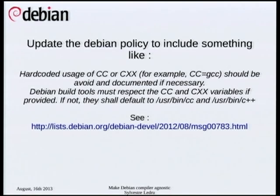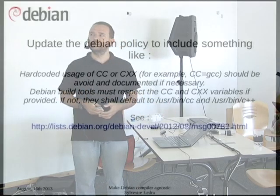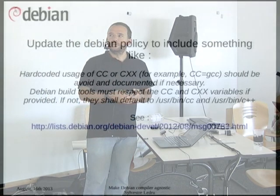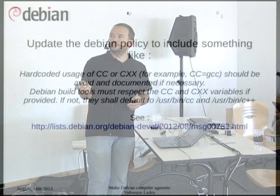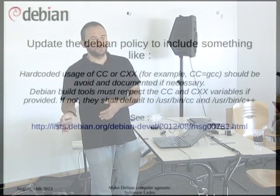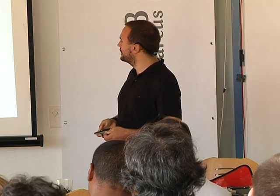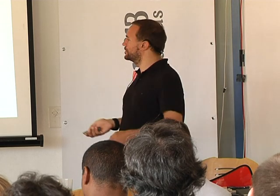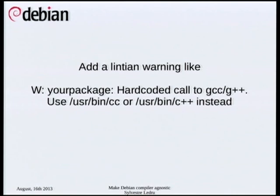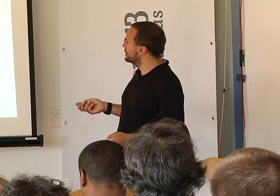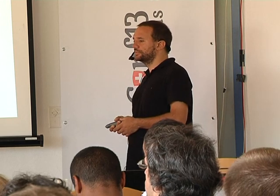We would also like to update the Debian policy — this is a long-term goal, it won't happen soon. We would like to recommend people not hard-code GCC and G++ into their Debian rules or upstream build systems, but instead use /usr/bin/cc and /usr/bin/c++ as the default compiler. CMake is already doing that, and we would like to do this in the next update of the Debian policy. Obviously it won't be enforced — it's just a suggestion. We also want to add more Lintian warnings regarding this.